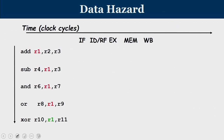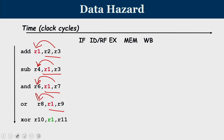Now let us look at data hazards. Consider an instruction sequence where the format is opcode, destination, operand1, operand2. We have: ADD R1, R2, R3; then SUB R4, R1, R3; AND R6, R1, R7; AND R8, R1, R9; XOR R10, R1, R11. The peculiarity is that the result of the first instruction stored in R1 is used by all subsequent instructions. The problem is that the result in R1 will be available only at the write-back stage, whereas subsequent instructions need the value of R1 in their respective decode stages.